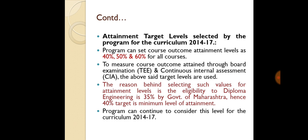Why choose a minimum target level of 40% for a program? The reason behind selecting such values: the eligibility for a diploma in engineering is 35% by the government, and hence 40% target is the minimum level of attainment. If a student has more than 40%, he is in level 1. The program can continue to consider this level for the curriculum 2014–2017.